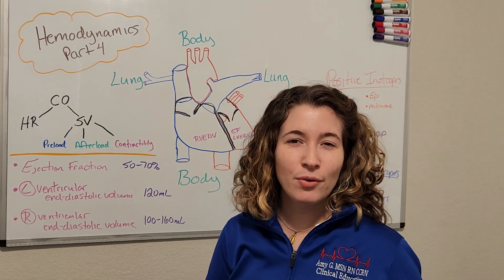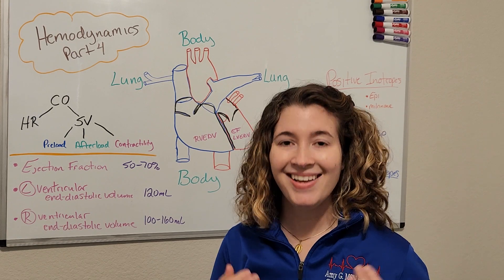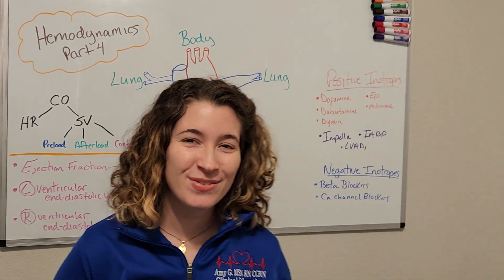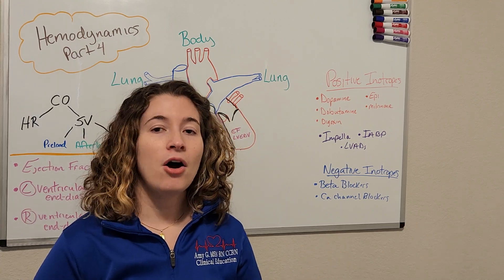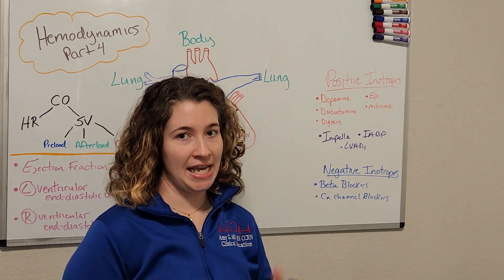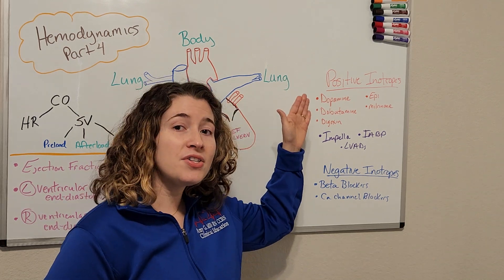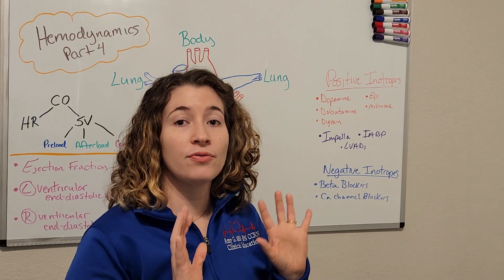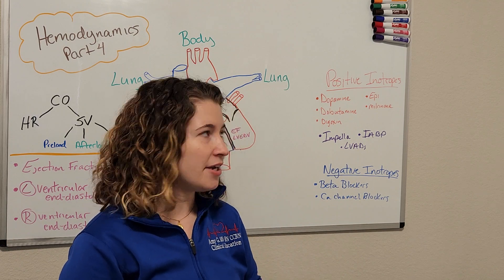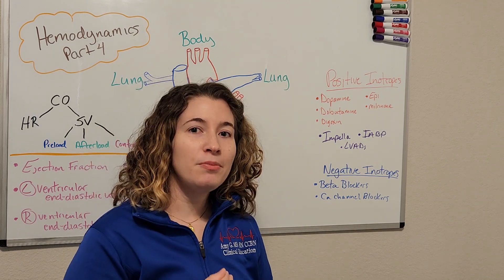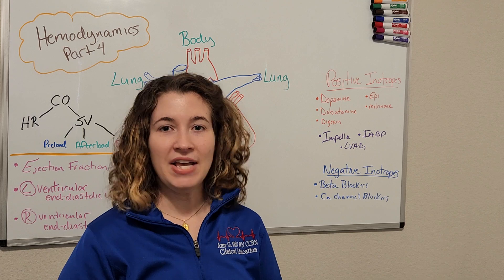Obviously, like we've been alluding to, the main problem that we think of when we think of contractility is heart failure. Lucky for us, we have several different options when it comes to fixing those problems. On the medication side of things, we have our positive inotropic agents. Inotrope is just a fancy word for contraction, so positive inotropes are going to improve the contractility of the heart and ultimately the heart's ability to pump out that blood. So things like dopamine, dobutamine, digoxin — I call those the D drugs — and we also have epinephrine and milrinone in this family as well.